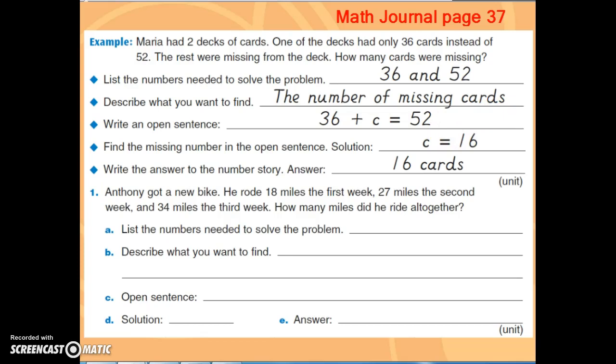Some of you may also do a subtraction problem. You could do 52 minus the number that you know, minus 36, equals, and since we don't know what it equals yet, that would be your variable. So your number sentences can look different depending on what operation you decide to use to solve the problem.